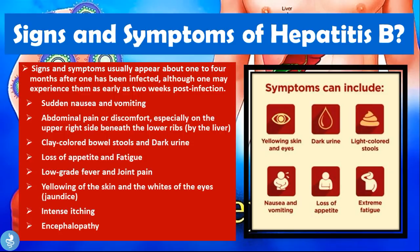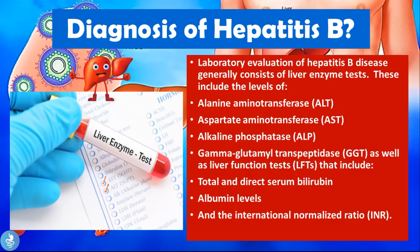Laboratory evaluation of Hepatitis B generally consists of liver enzyme tests. These include alanine aminotransferase (ALT), aspartate aminotransferase (AST), alkaline phosphatase (ALP), and gamma-glutamyl transpeptidase (GGT), as well as liver function tests including total and direct serum bilirubin, albumin levels, and the international normalized ratio (INR). When there is damage to liver cells (hepatocytes), we see increased levels of ALT, AST, ALP, and GGT — a distress signal the liver sends to indicate something is wrong.